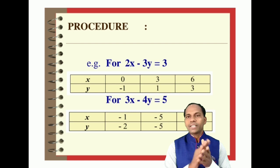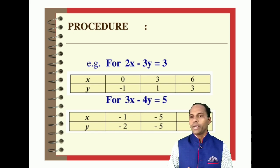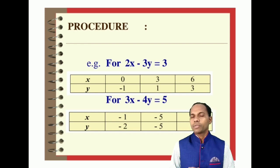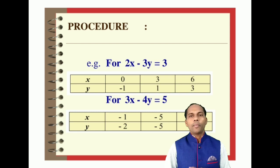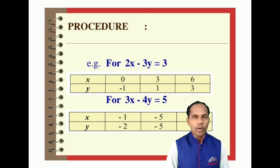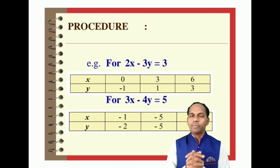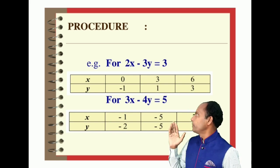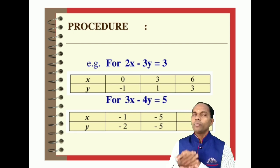For the second equation, 3x - 4y = 5, you find y = (3x - 5) / 4. When x = -1, y = -2; when x = -5, y = -5; and when x = 7, y = 4. So the three ordered pairs are (-1, -2), (-5, -5), and (7, 4).